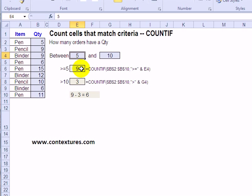First we want to count how many orders had a quantity greater than or equal to 5. So with this COUNTIF it's looking at the range where the quantities are, range B2 to B10.